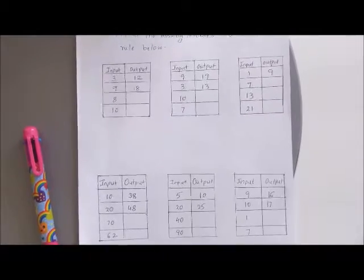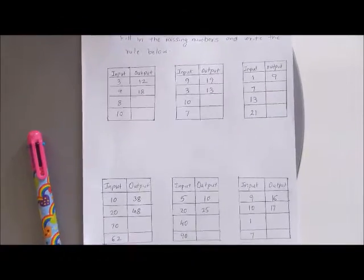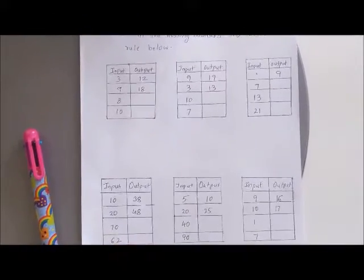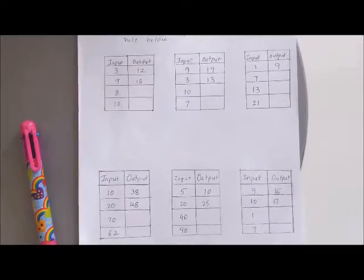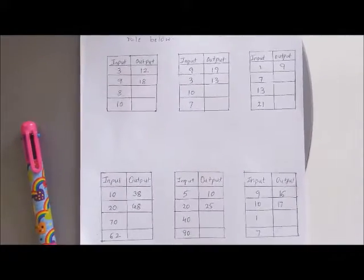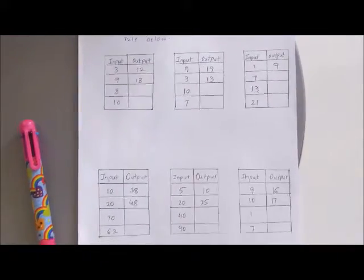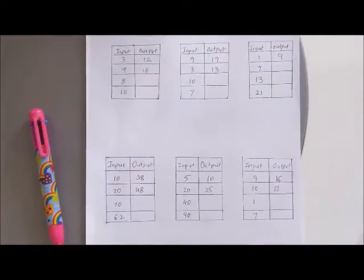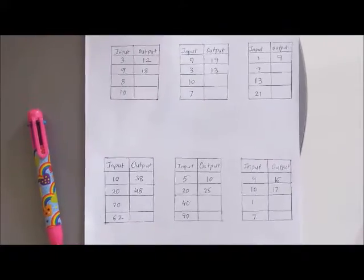The next one is input and output — fill in the missing numbers and write the rule below. In the first table I am giving input as 3 and output as 12, so the rule being used is plus 9, that is 3 plus 9 equals 12. Similarly, 9 plus 9 is 18. The child has to solve the next two numbers using the same rule and write the output. I have given 6 tables in which each input and output is different and each table uses a different rule.